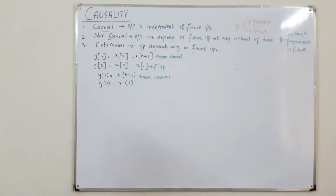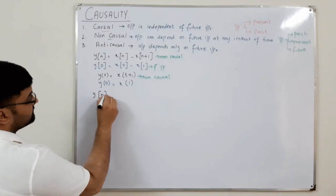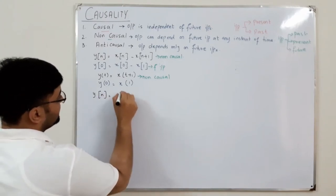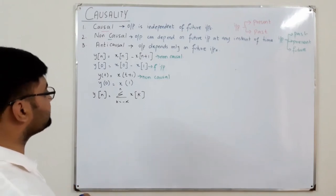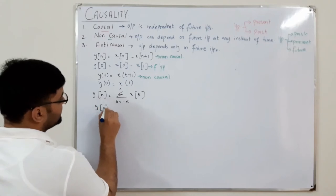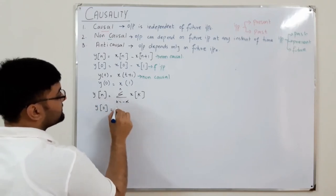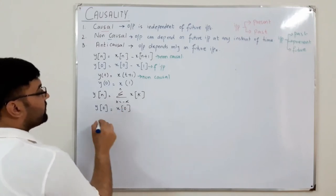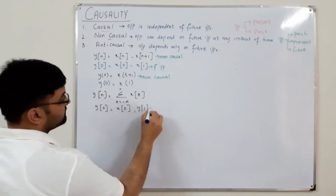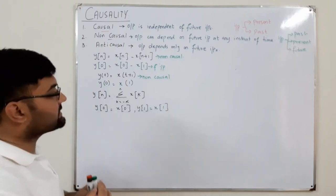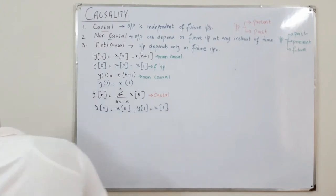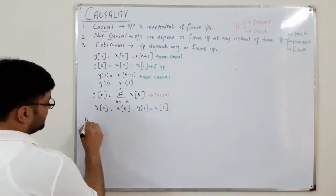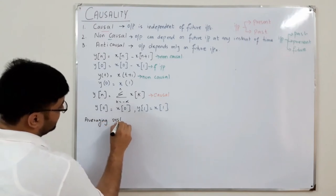For the accumulator: y[n] = Σ x[k] for k from -∞ to n. Checking y[0] gives the sum up to k = 0, and y[1] includes x[1]. The accumulator sums present and past values only, so it is a causal system.